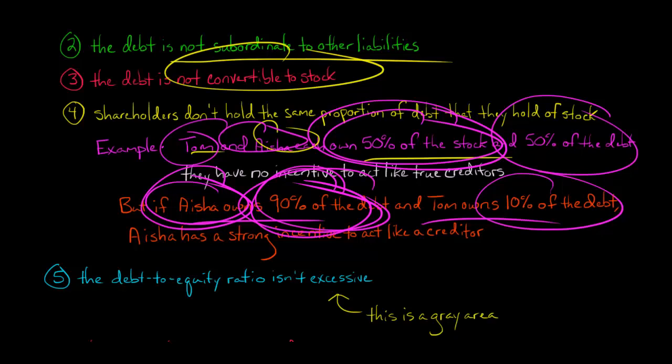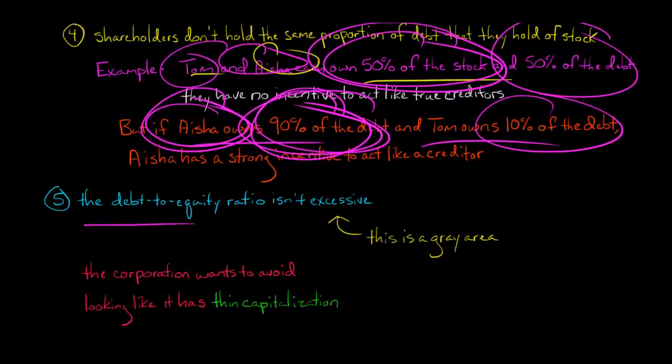Finally, if the debt-to-equity ratio is seen as excessive, the IRS might come in and say: wait a minute, this company is thinly capitalized—they have so much debt. Actually, some of this is capital contribution.